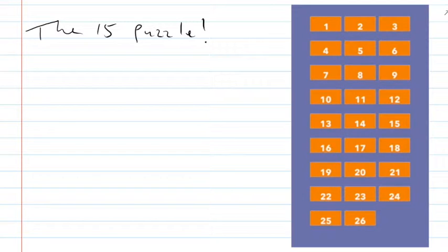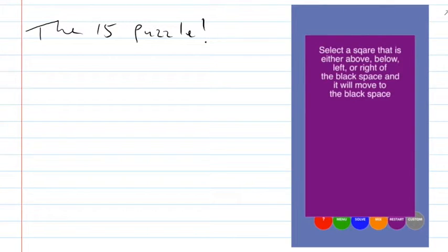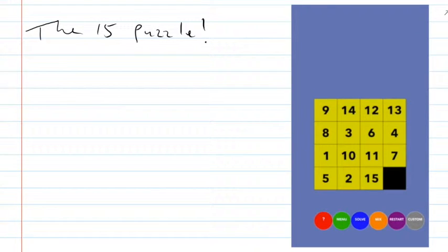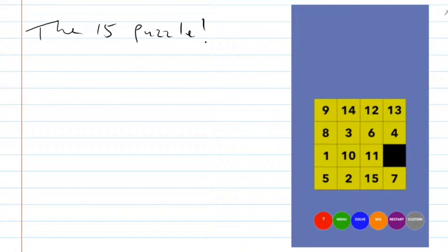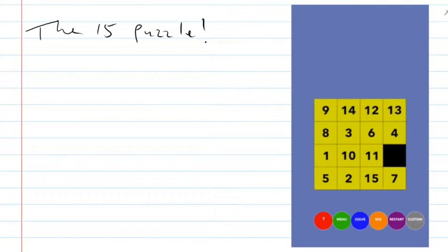Puzzle number eight is one of the most famous puzzles ever made. It used to be called the 15 puzzle. The idea is you've got the numbers from one to 15 and a blank square. It's a physical puzzle where things can slide. If you take a number that's above, below, left, or right of the blank — like the seven — and click on it, it will move into the blank spot.